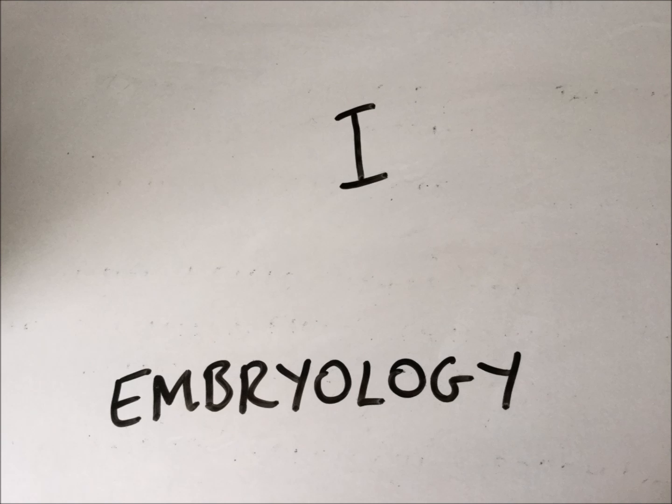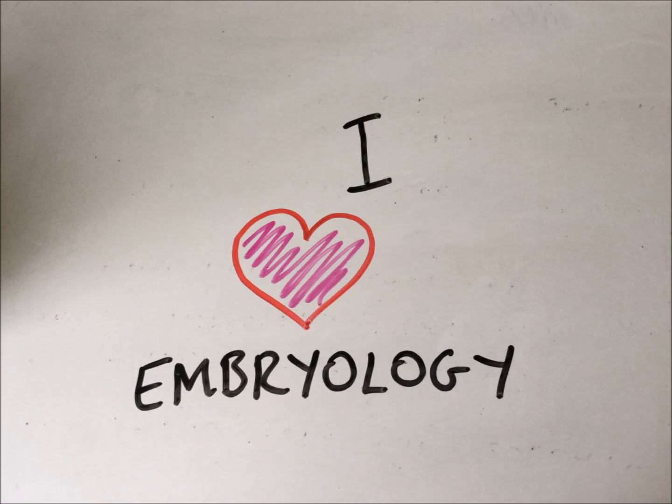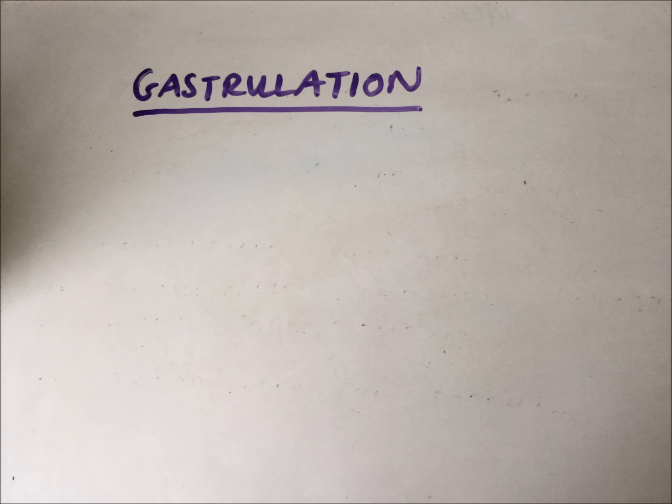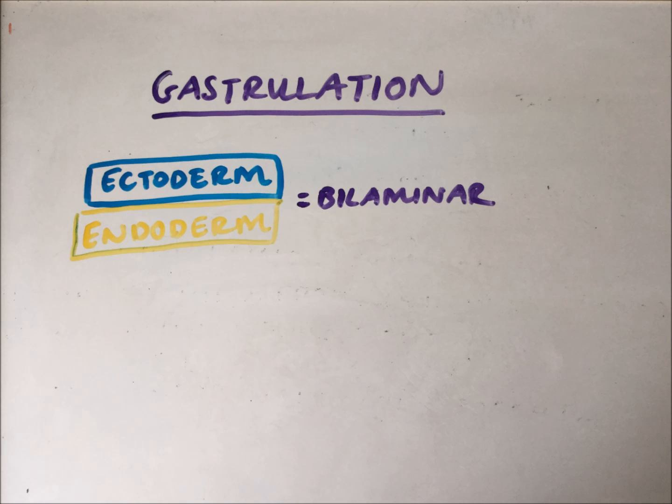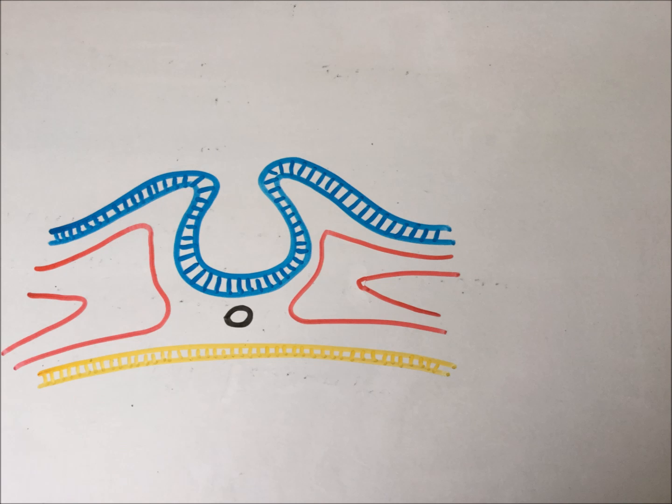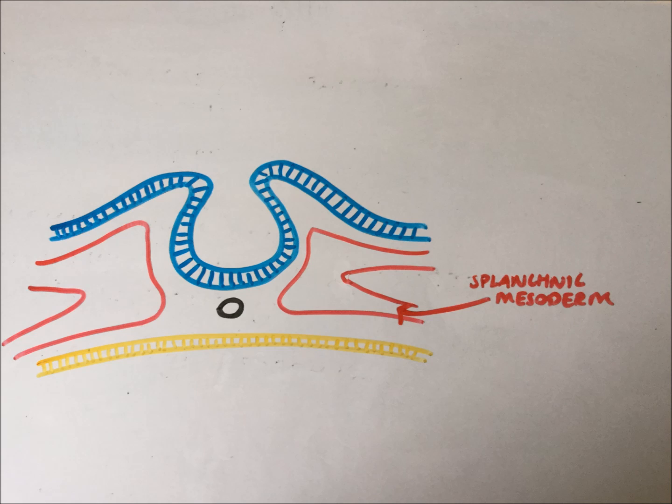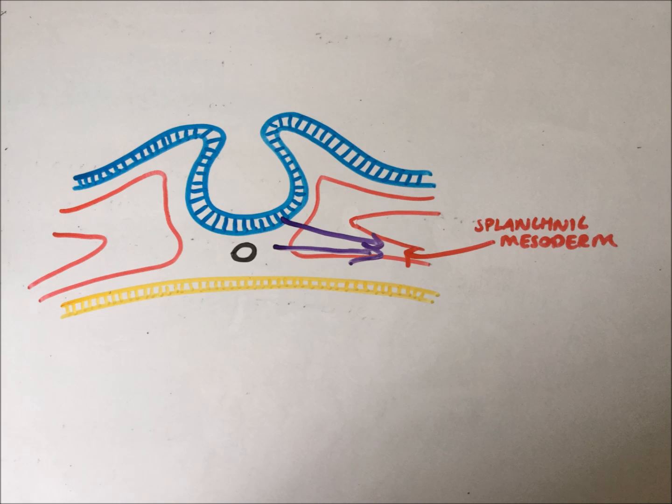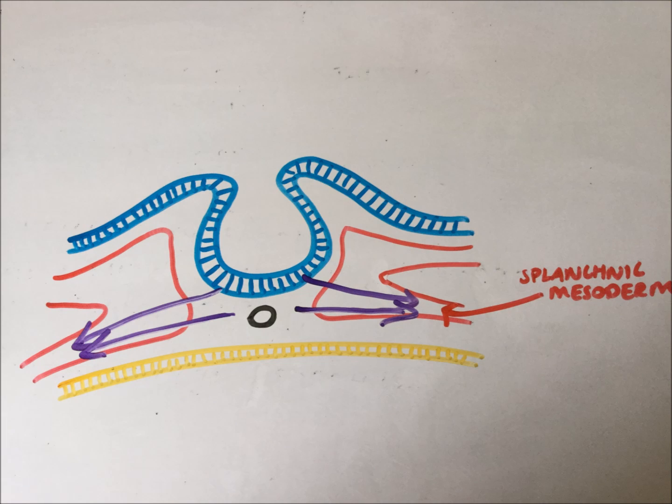And nothing's quite so complex as the heart. It starts with gastrulation when the two layers of the disc become trilamina. And to the splanchnic mesoderm will gradually move the cardiac progenitors.